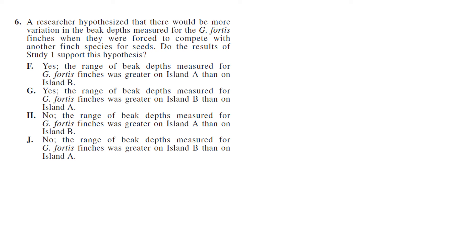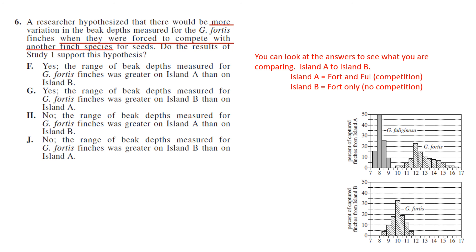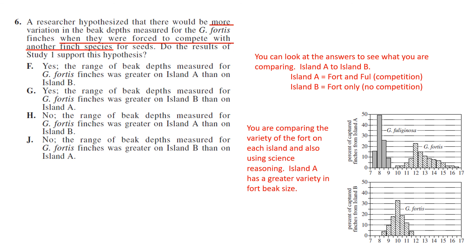Question six: a researcher hypothesized there would be more variation in beak depth for Fortis finches when forced to compete with another species. Do the results of Study One support this? You compare Island A and Island B — Island A has two species competing, Island B does not. There is indeed more beak variety on Island A, so the answer is yes, because the range of beak depth was greater on Island A than on Island B.